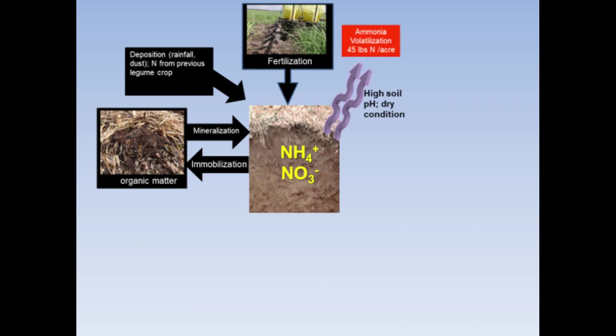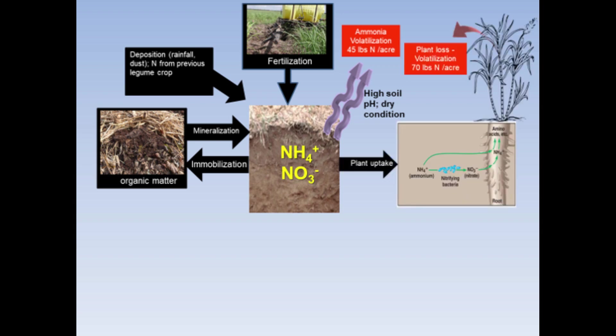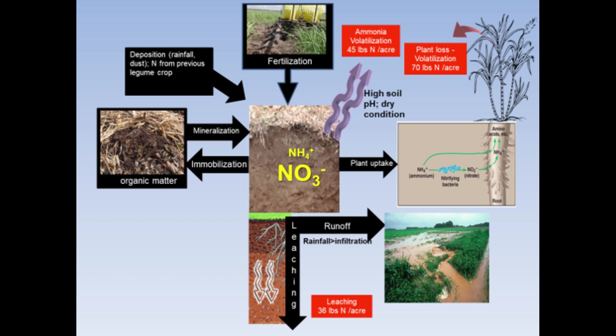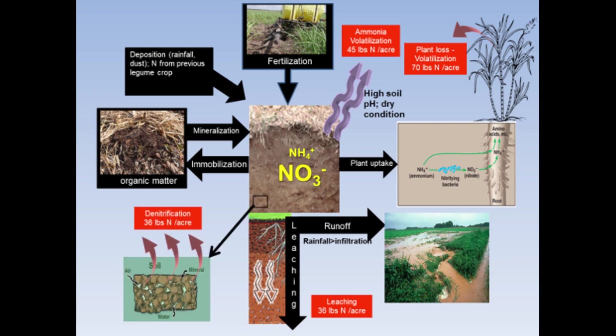There are many pathways by which nitrogen can be lost from the soil. This includes ammonium volatilization in high pH dry soil and even during plant assimilation of absorbed nitrogen. With time, nitrate becomes the major form of plant-available nitrogen in the soil. Because it is very mobile, nitrate is prone to loss via leaching. Losses may also come from runoff, which takes place when cane fields receive excessive rainfall. When soil is depleted of oxygen — which happens when soil is saturated with water or flooded — nitrate is lost via the denitrification process.